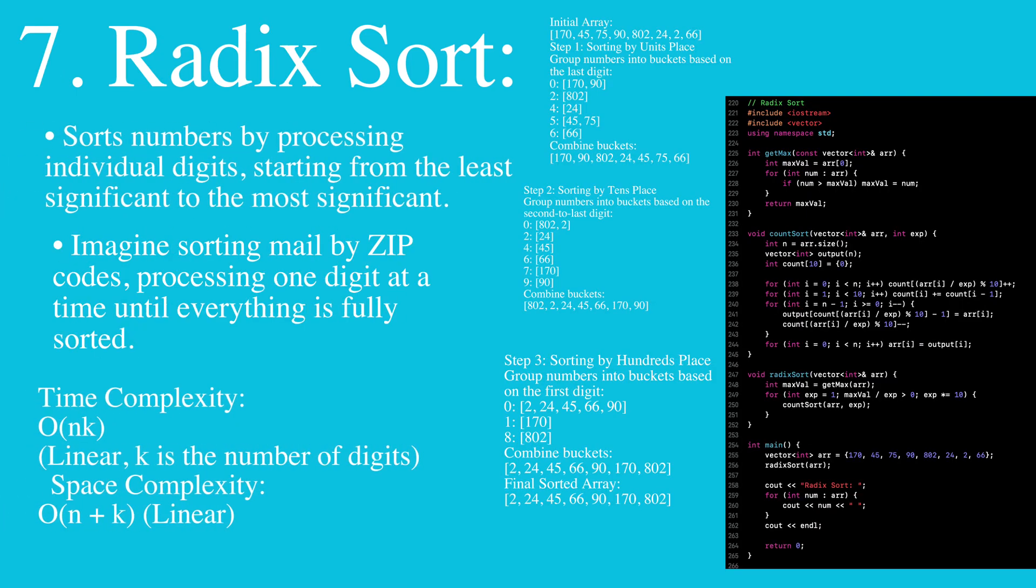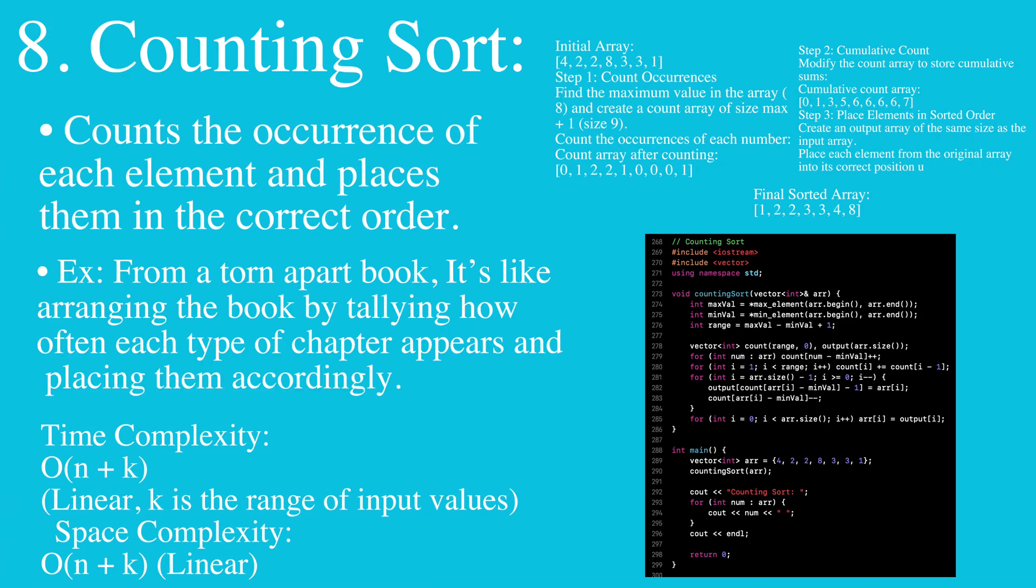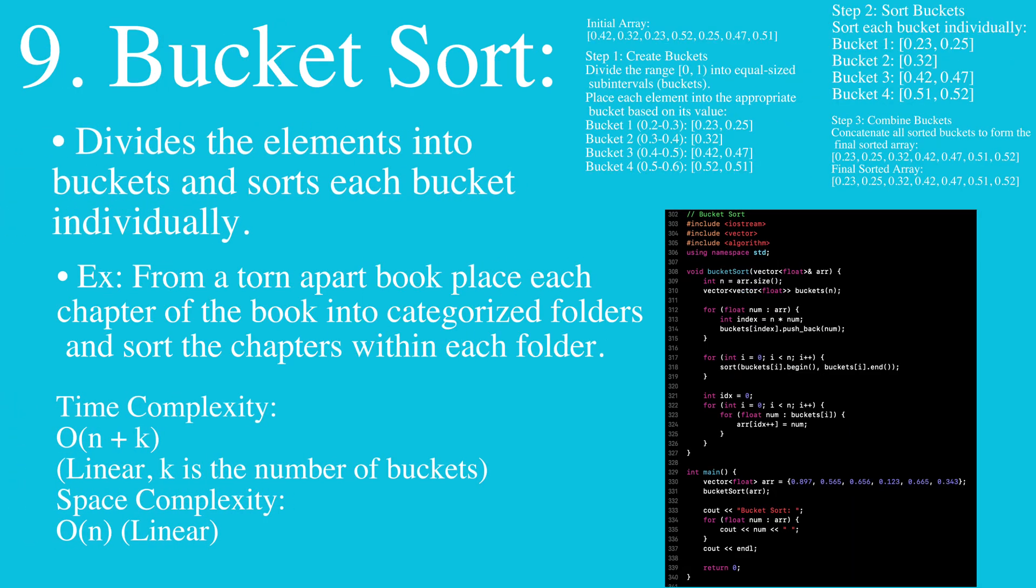Then we have radix sort, where we sort numbers by processing individual digits, starting from the least significant to the most significant. Then we have counting sort, where we count the occurrence of each element and place them in the correct order. Then we have bucket sort, which divides the elements into buckets and sorts each bucket individually.